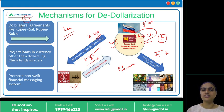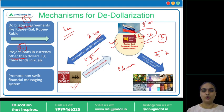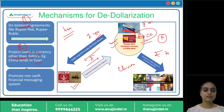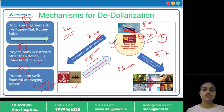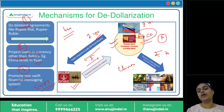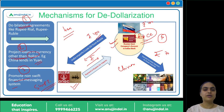The first mechanism of de-dollarization is bilateral agreements. The second is projecting loans in currencies other than dollars — development banks should provide loans in other currencies, like China providing loans in yuan, reducing dollar usage. The third mechanism is promoting non-SWIFT messaging systems. Since SWIFT access is controlled by US influence — as seen with Iran and Russia — countries should come up with alternative financial messaging systems. Russia has its SPFS and China has its CIPS, but they are not yet dominant enough.